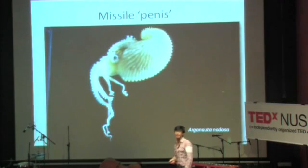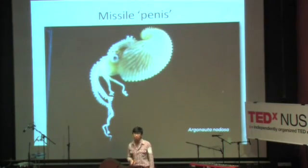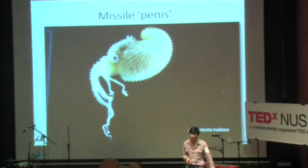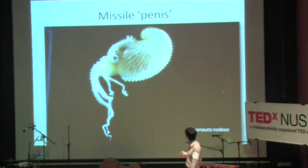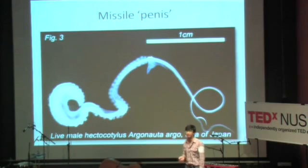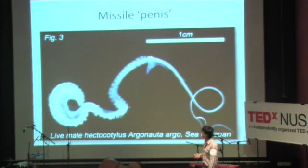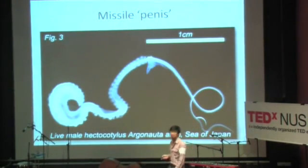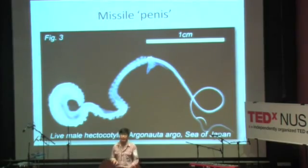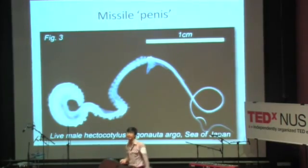What about this guy? It's called the argonaut — Argonauta. It has what I like to call a missile penis. Basically it doesn't even bother to have sex with the female — it sights the female, fires this arm laden with sperm, and shoots it right into the female.